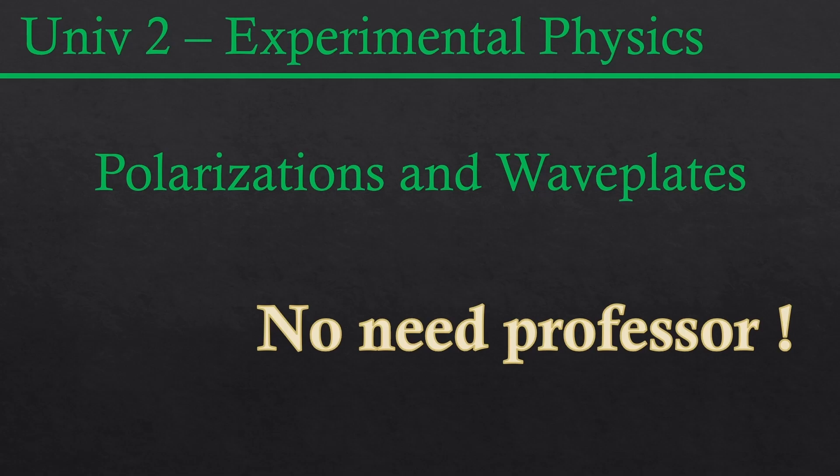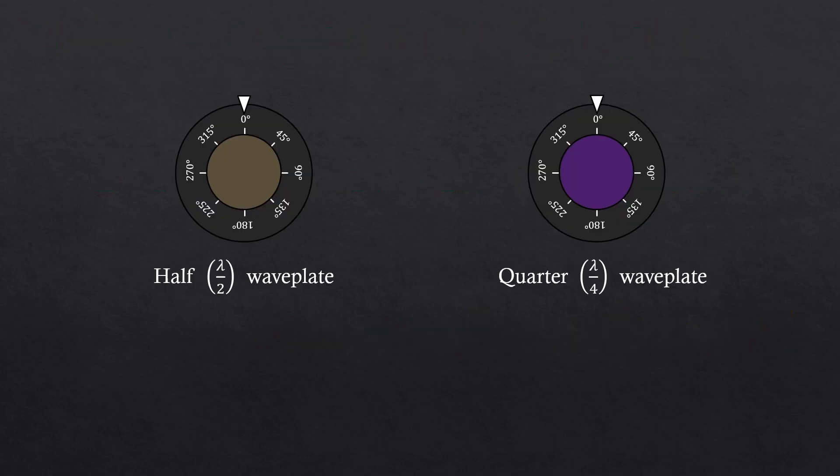I'll clarify how waveplates change polarizations of light. So this is a half-wave plate and this is a quarter-wave plate. They look almost identical, so when you purchase them, you have to make sure that they have labels or you label them.